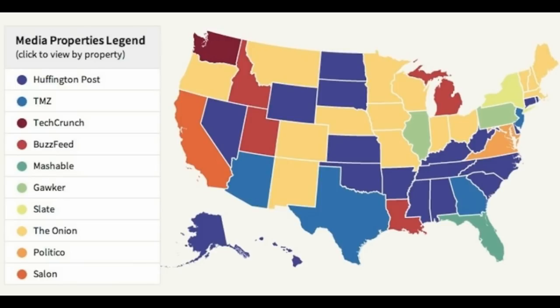And then where do the majority of people go to get their news? So: Huffington Post, TMZ, TechCrunch, BuzzFeed, Mashable, Gawker, Slate, The Onion, Politico, and Salon. None of those will tell the truth.